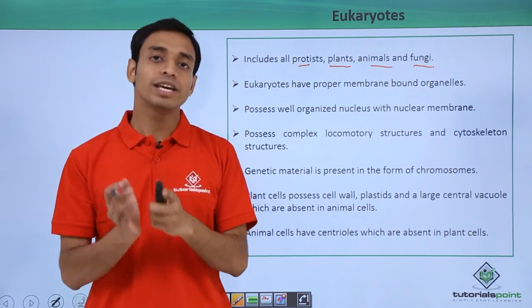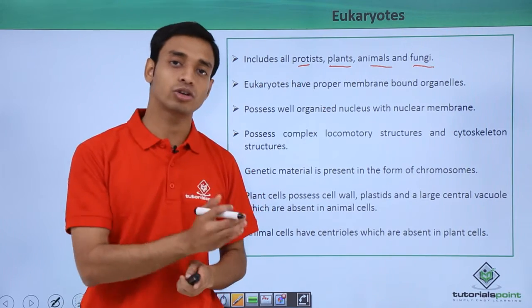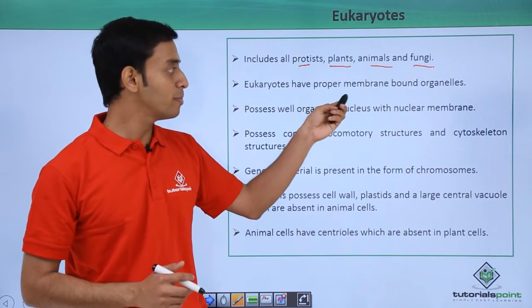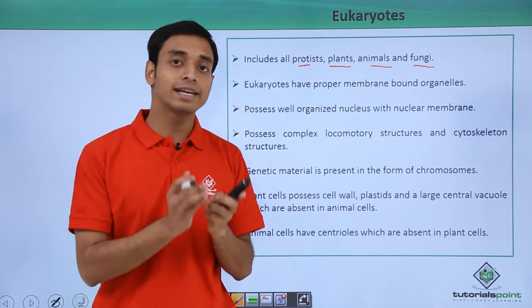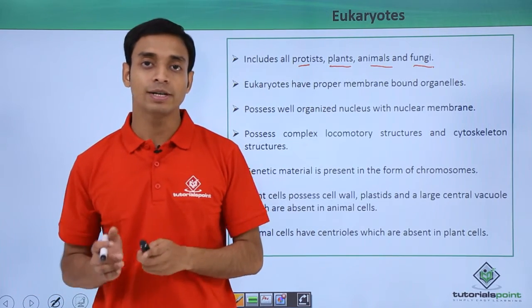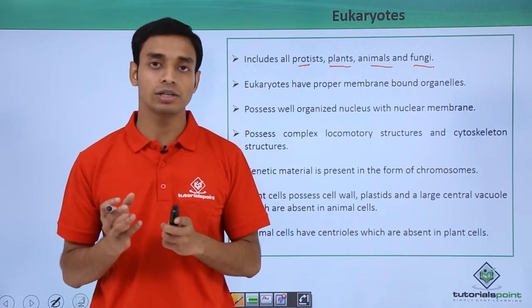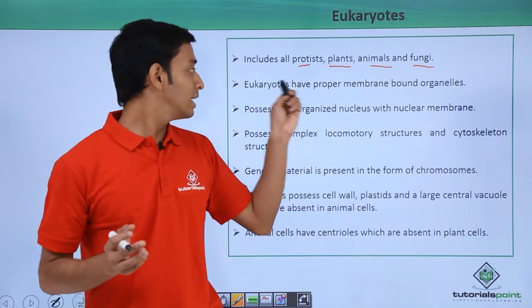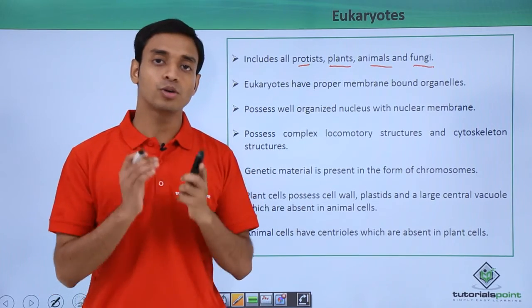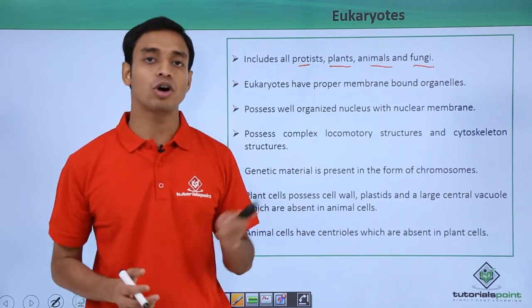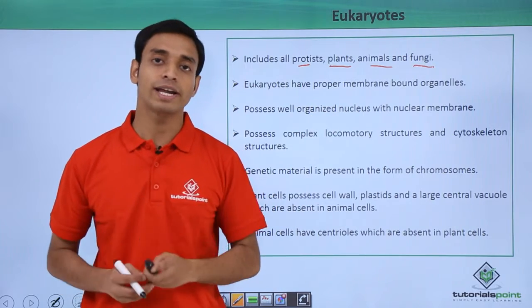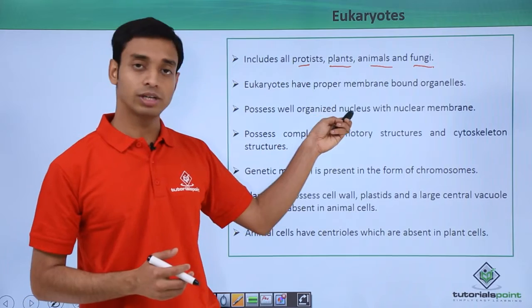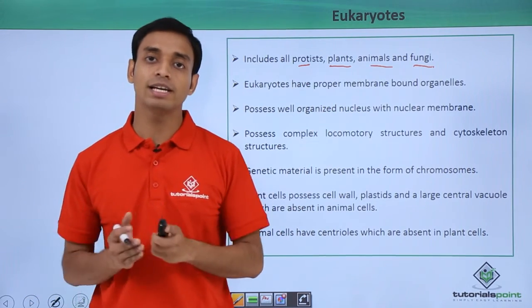The bacterial group is not included in eukaryotes because they belong to the group of prokaryotes. Eukaryotes have proper membrane-bound organelles, unlike prokaryotes which do not have membrane-bound organelles — in fact prokaryotes do not have proper organelles other than ribosomes. But eukaryotes have proper, well-defined membrane-bound organelles present inside eukaryotic cells.